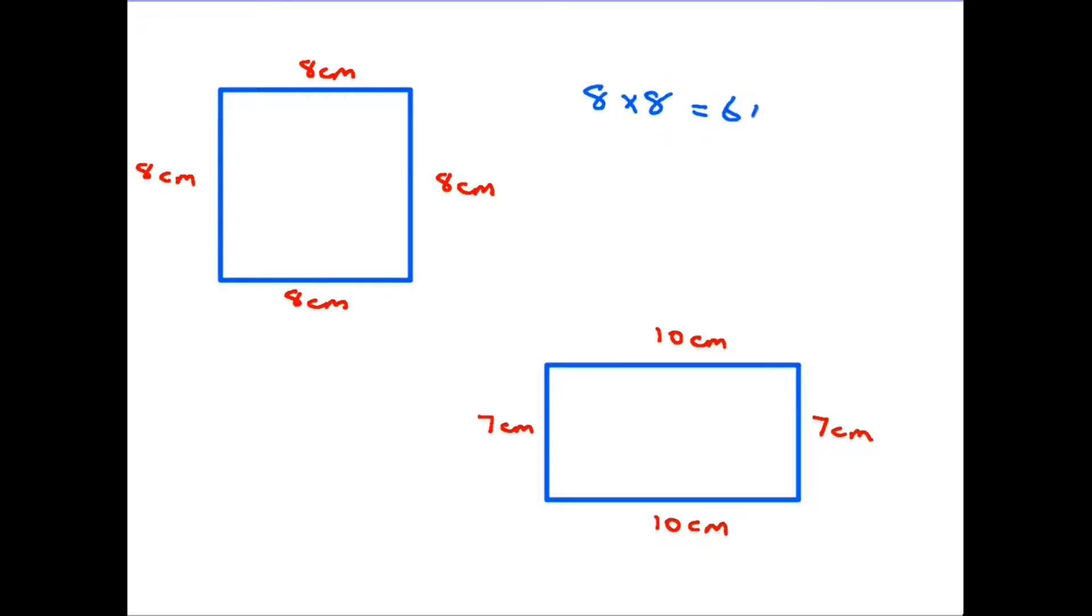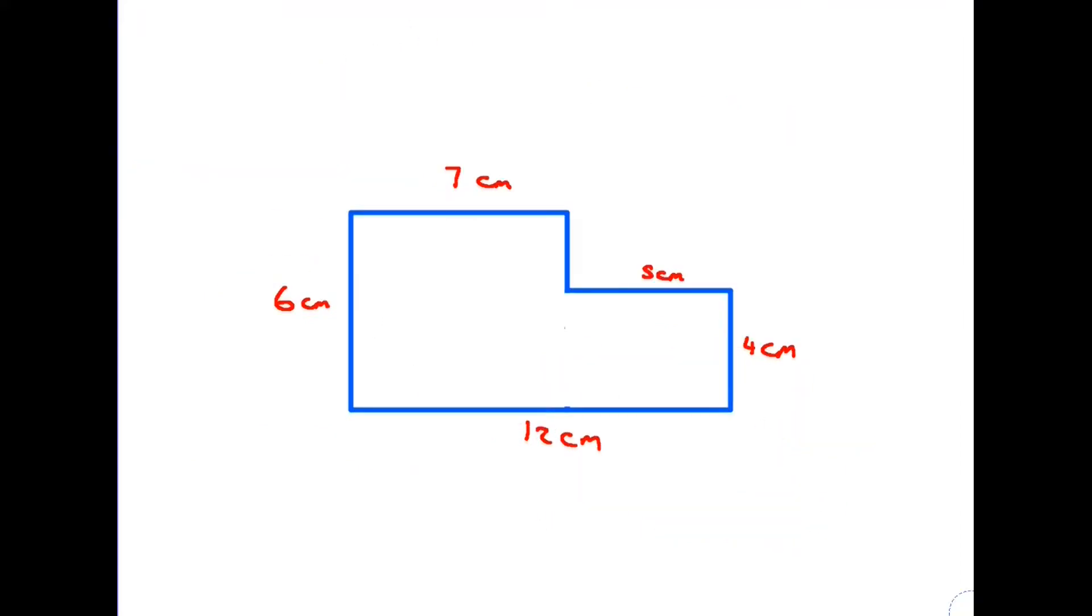Just to recap before we move on to a slightly more complicated shape: here's your square, 8 by 8, that's 8 times 8 equals 64 centimeters squared. Don't forget, had these been meters it would have been meters squared, miles miles squared. We keep the same units that we started with. Bottom one is 10 wide and it is 7 high. 10 times 7 equals 70 centimeters squared. We multiply the width by the height.